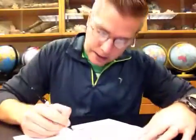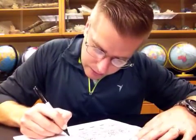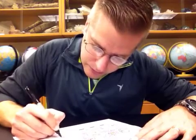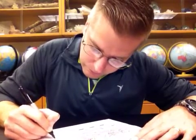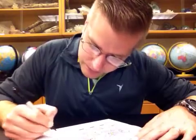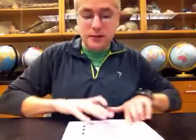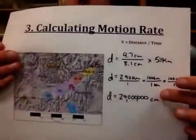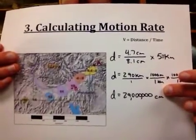So we go ahead and add the zeros at the end of the 290. And we see that we are looking at a distance of 29 million centimeters.